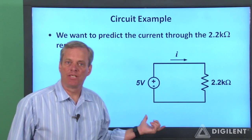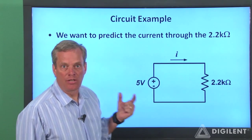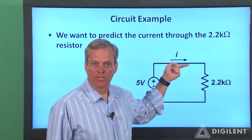We'll use this circuit to investigate how to apply Ohm's law in a circuit analysis. We have a 5 volt source connected directly to a 2.2 kiloohm resistor. We want to calculate what the current through the resistor will be.